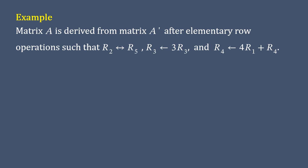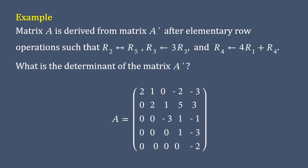The row operations include interchange of two rows, a multiplication of a row by a multiplier, and the addition of two rows. The question is, what is the determinant of the matrix A prime, if the matrix A is given?